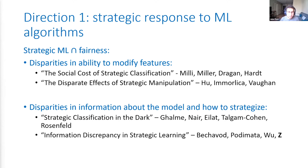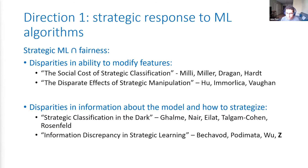There has also been recent work looking at disparities in information about the model and how this affects how different agents strategize in different populations. One of those papers is 'Strategic Classification in the Dark' by Ghalme, Nair, Eilat, Talgam-Cohen, and Rosenfeld. I also want to mention our own work, 'Information Discrepancy in Strategic Learning' by Braverman, Podimata, Wu, and myself.